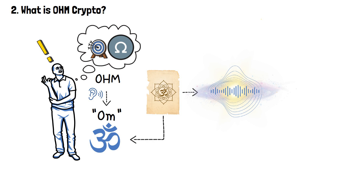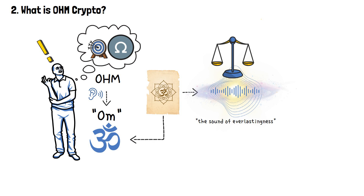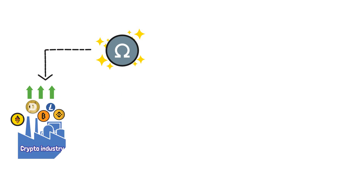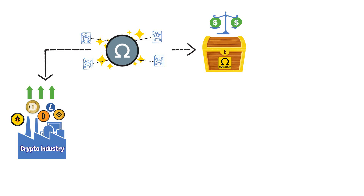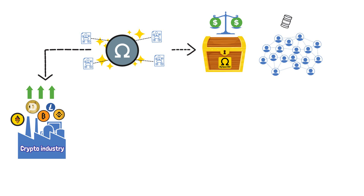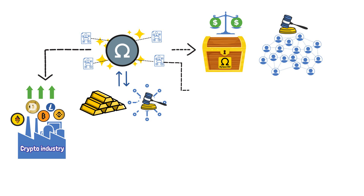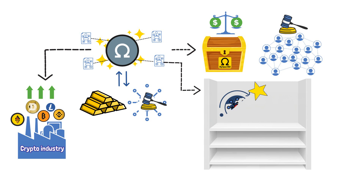This approach creates a self-sustaining ecosystem where OM acts as a stable store of value resistant to external market fluctuations. When you start realizing the entire point behind OM's creation, you start understanding why it's called OM — it sounds very similar to 'Om,' which, according to ancient Hindu scriptures, is the sacred sound of the universe, the sound of everlastingness. With its unique approach, OM has contributed to the improvement of the crypto industry by introducing novel concepts such as treasury-based stability models and community-centric governance.